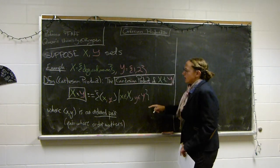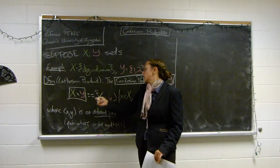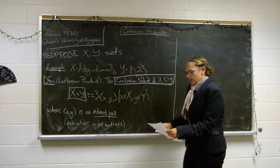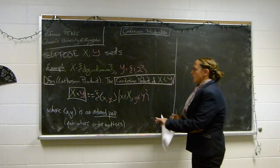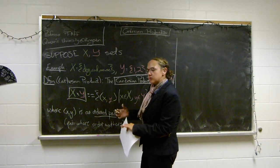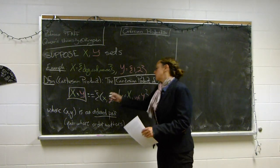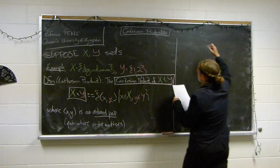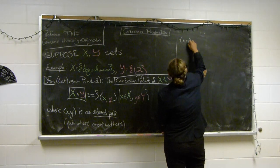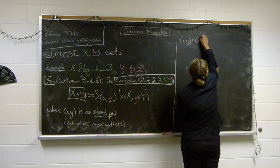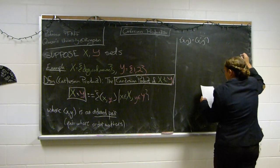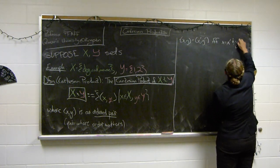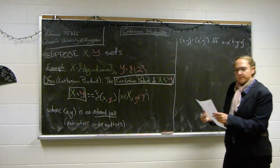Now it's always important to know when we consider two things to be the same. Two ordered pairs (x, y) and (x', y') are considered to be the same if and only if both x = x' and y = y'. The order doesn't work to swap, as we said.